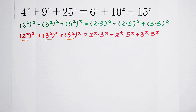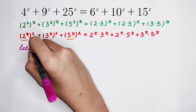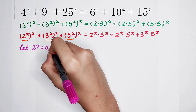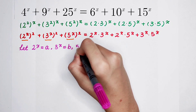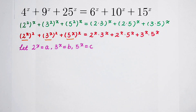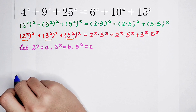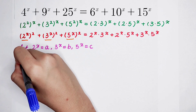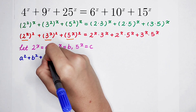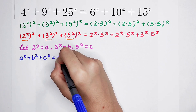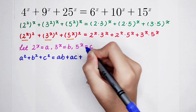So what should I do? Very good — I'm going to make a substitution. Let 2^x equal A, 3^x equal B, and 5^x equal C. Very good. So we have to rewrite this equation in terms of A, B, and C.